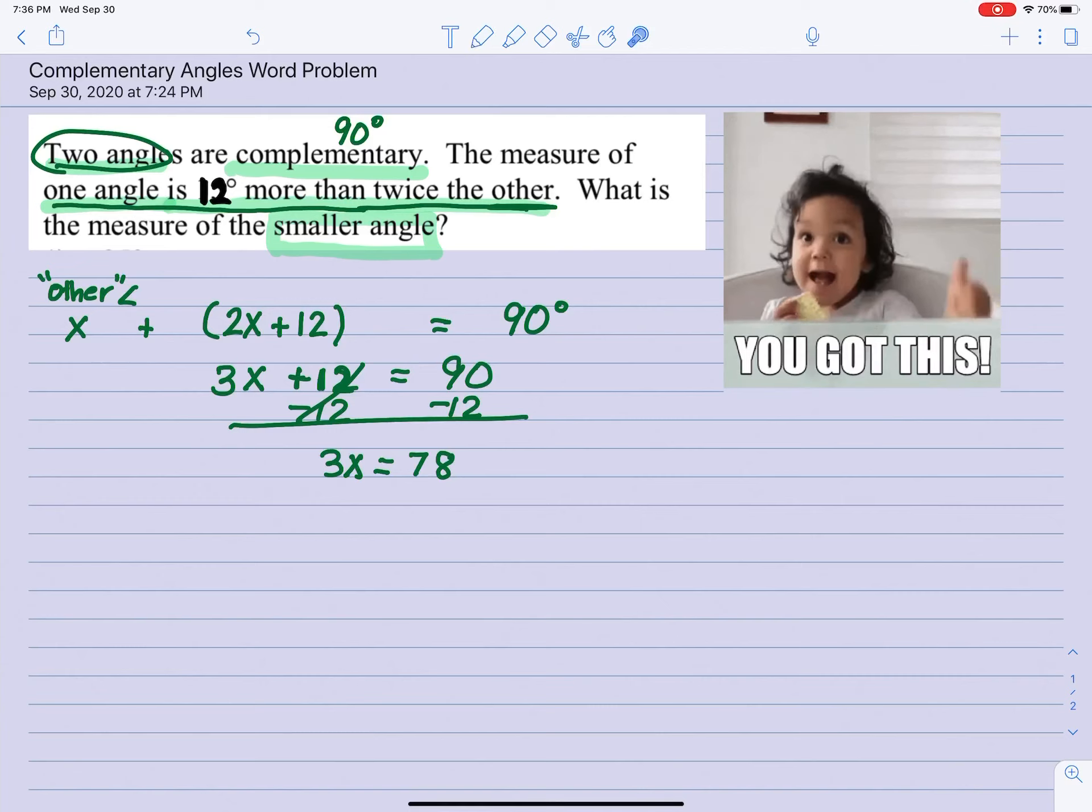Now we still need to get x by itself. This is multiplication, so the opposite is division. So we divide both sides by 3, and x is equal to 26.